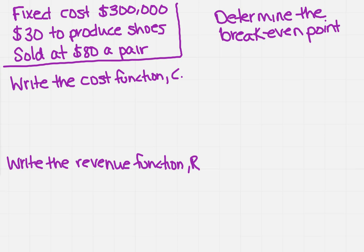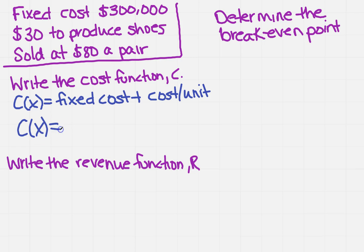If you recall from what we talked about in class, the cost function is equal to the fixed cost plus the cost per unit produced. So I need to have a variable. Well, if I'm using C of X, the X has to be that variable. So the X in our case is going to be shoes.